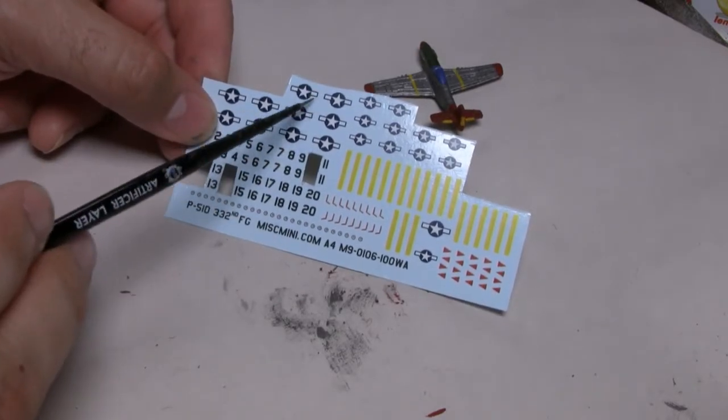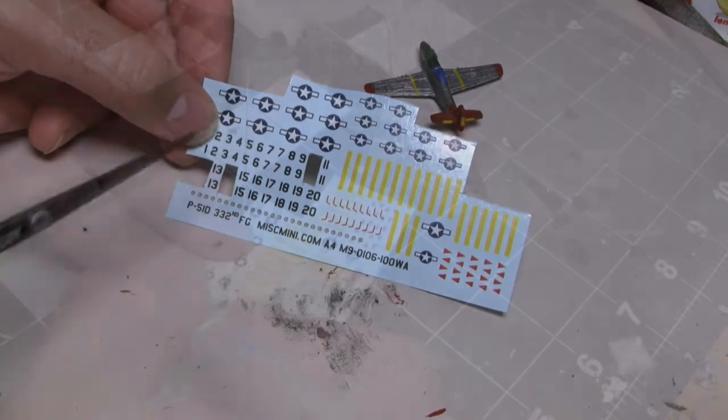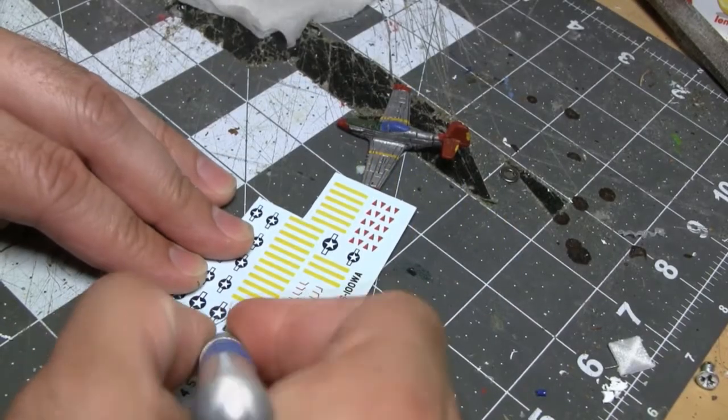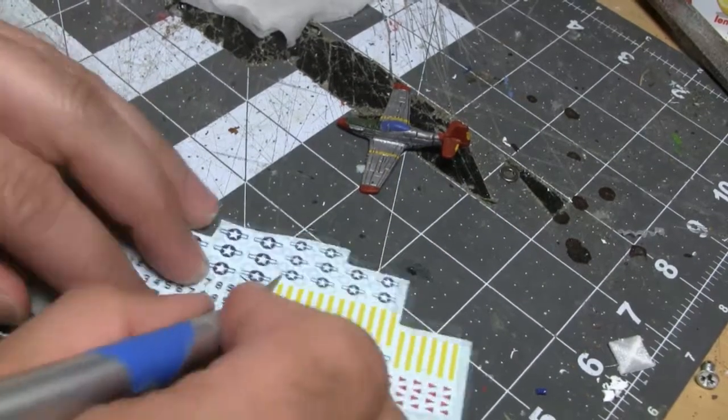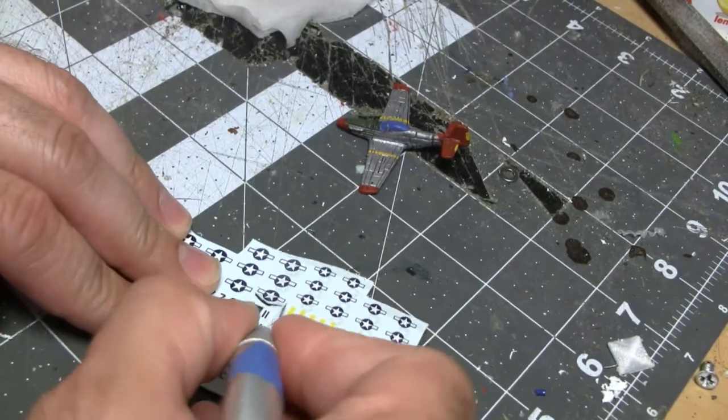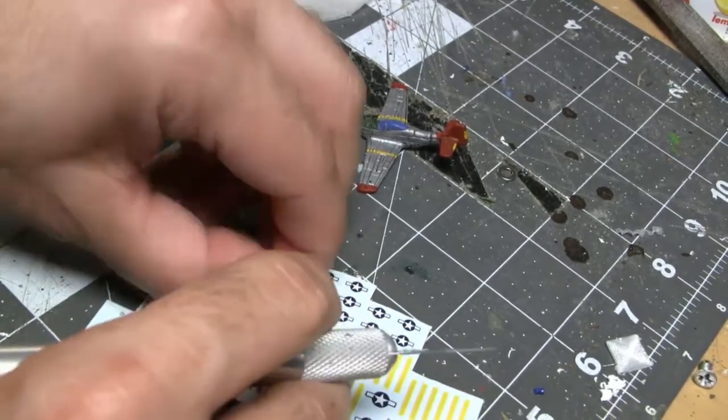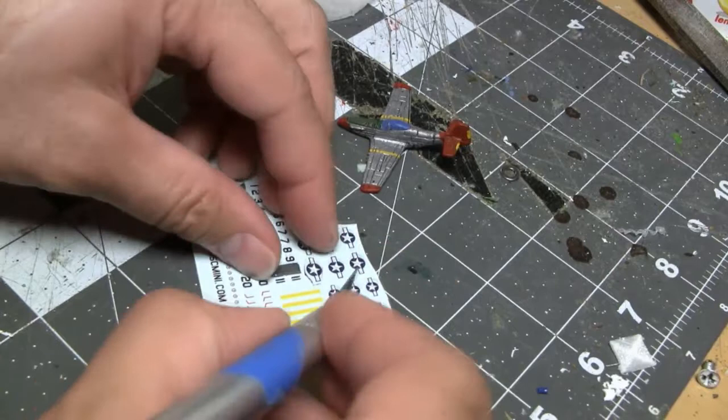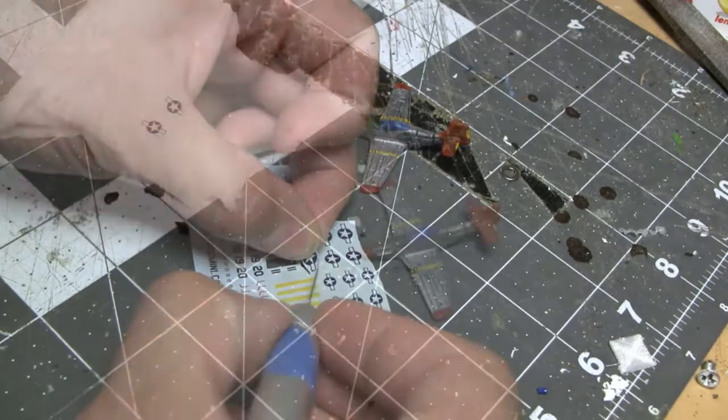In general, I think all the decals are 1-200th scale, which are the scale for Blood Red Skies. However, they do sometimes have an option for normal 1-200th scale and a little bit smaller size.